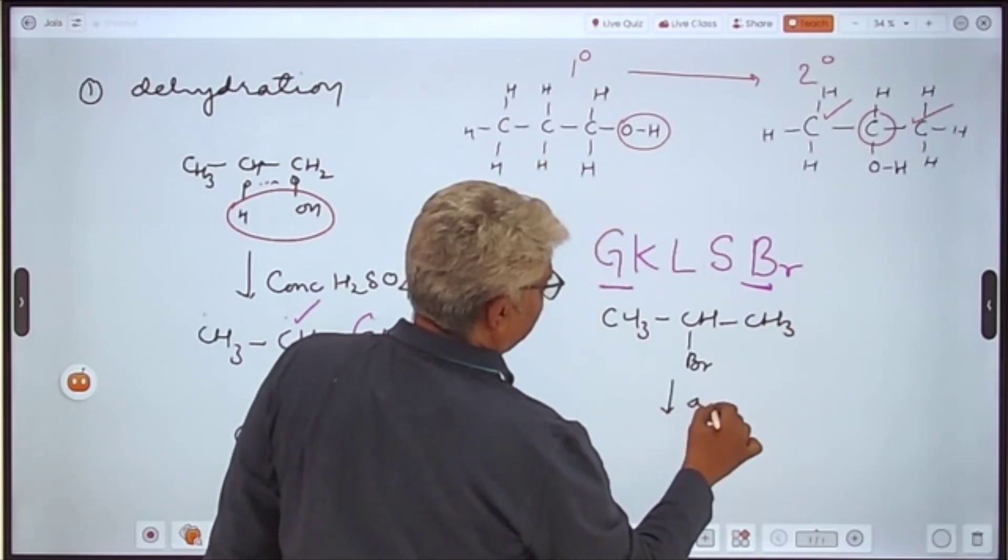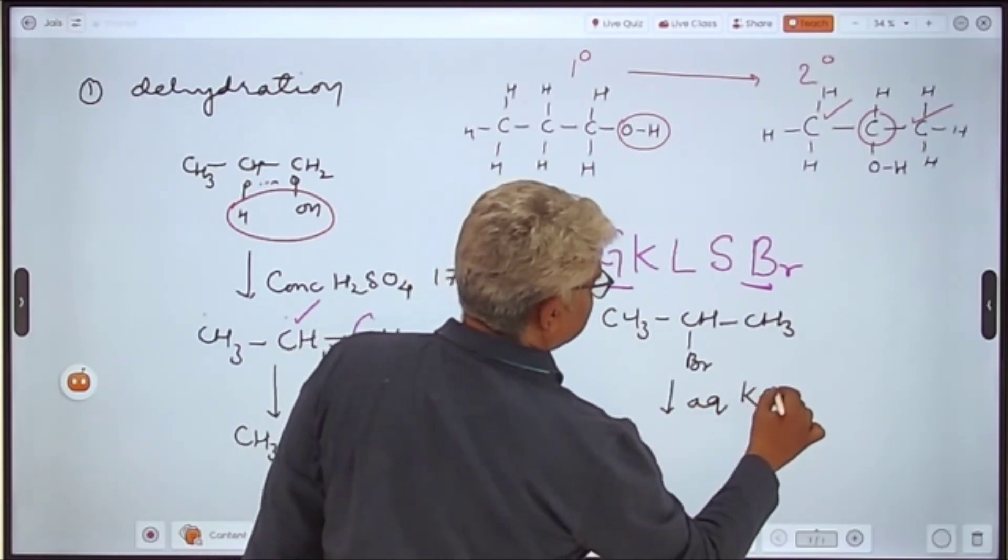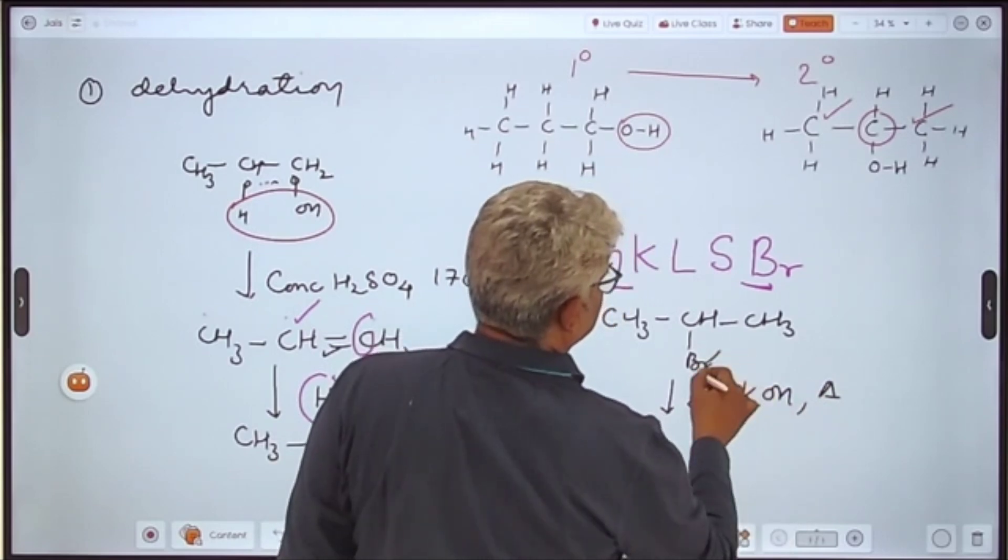And after this you can easily convert to 2-propanol using aqueous KOH and heat. Potassium bromide is released.